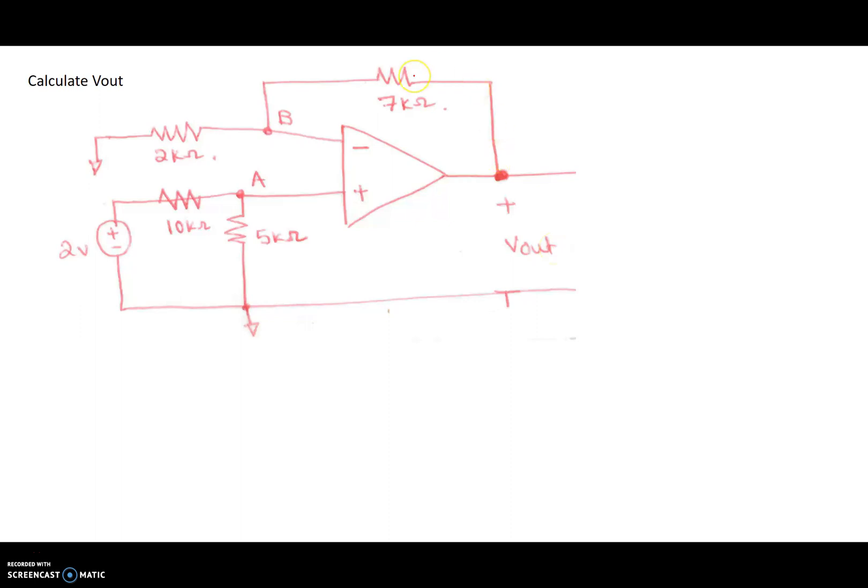There's negative feedback. We'll assume this op-amp is ideal, meaning no current goes through to the negative and positive terminals, and also that the node VA and VB are at the same potential because of ideal op-amp.